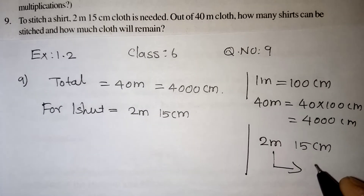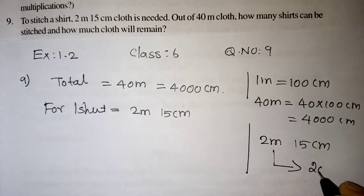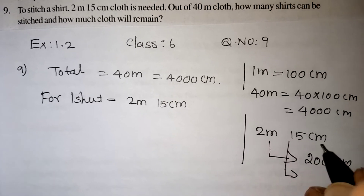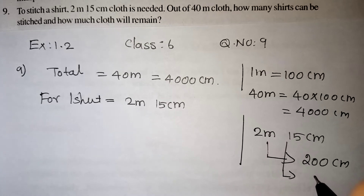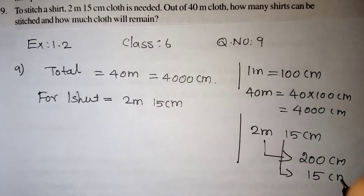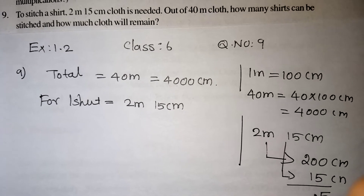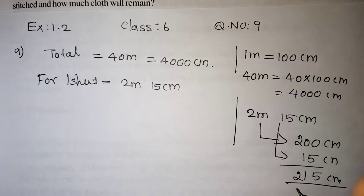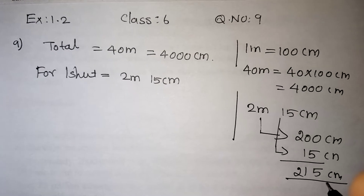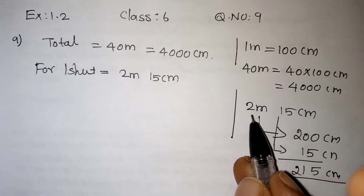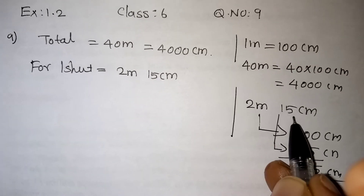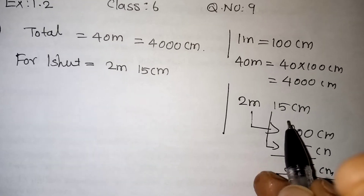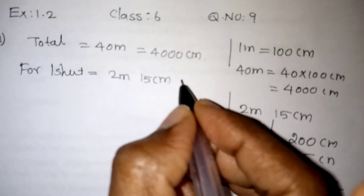For 1 metre there are 100 centimetres, so 2 metres will be 200 centimetres. The 15 is already given in centimetres, so just add it as it is: 200 plus 15 gives 215 centimetres. Because 2 metres will be 200 centimetres and 15 centimetres is already available, so 215 centimetres.